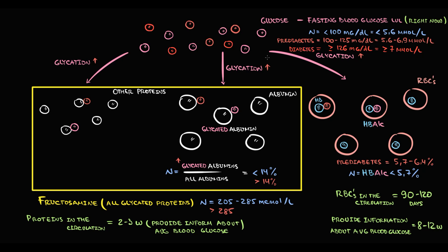With increasing blood glucose level, glycation increases. With increasing hemoglobin glycation, the level of glycated hemoglobin increases even further. When glycated hemoglobin becomes greater than 6.5%, it is a criterion of diabetes.